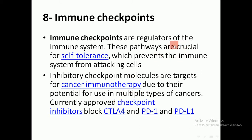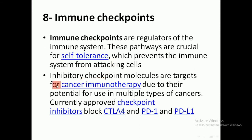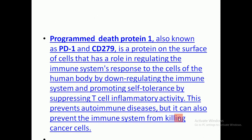There are also immune checkpoints. Immune checkpoints are regulators of the immune system. These pathways are crucial to prevent the immune system from attacking normal cells. Inhibitory checkpoint molecules are targets for cancer immunotherapy. These immune checkpoints are normally present in a person to maintain self-tolerance, but we can use inhibition of these checkpoints as a source of immunotherapy against tumors. Currently approved checkpoint inhibitors block CTLA-4, PD-1, and PD-L1.